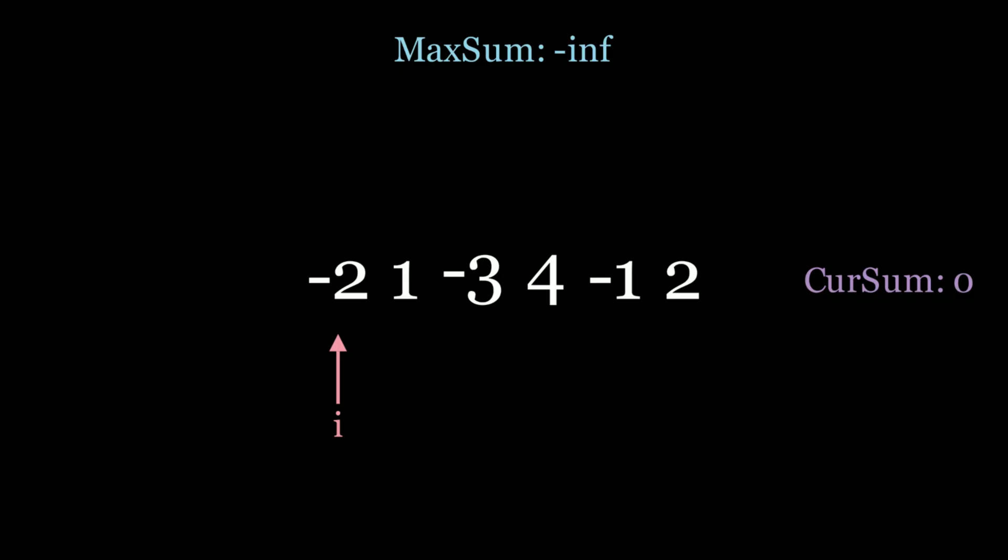We're going to start out this algorithm keeping track of two variables. One variable is called the max sum. This is going to be the global maximum sum that we return at the end of the algorithm. And so this is initialized to negative infinity at first.